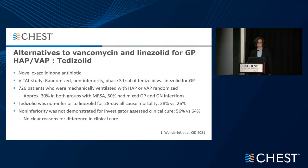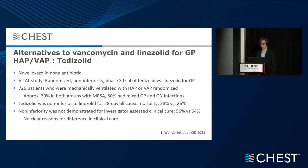Tedizolid is one alternative to vancomycin and linezolid, active against gram-positives — though not the agent of choice in the case question. The VITAL study was a randomized non-inferiority phase 3 trial comparing tedizolid to linezolid for gram-positive pneumonia, with 726 mechanically ventilated patients with HAP or VAP. About 30% in both groups had MRSA and 50% had mixed gram-positive and gram-negative infections. The overall result was that tedizolid was non-inferior to linezolid for 28-day all-cause mortality; however, non-inferiority was not demonstrated for investigator-assessed clinical cure.